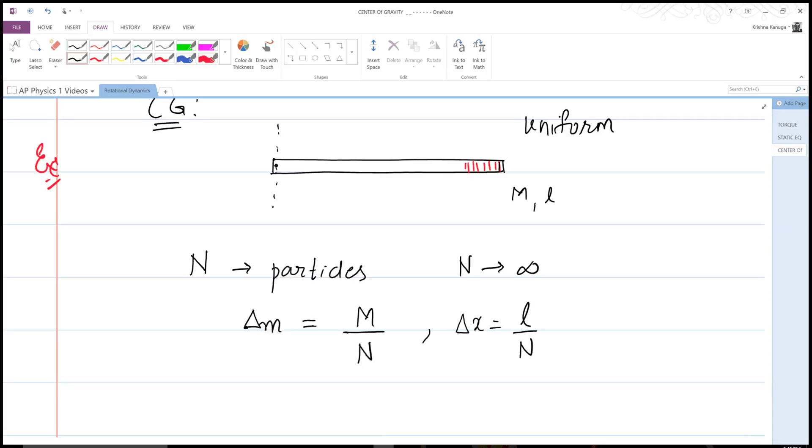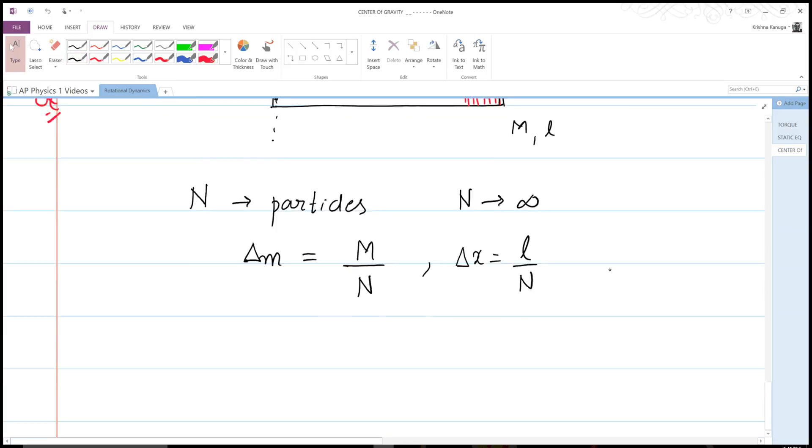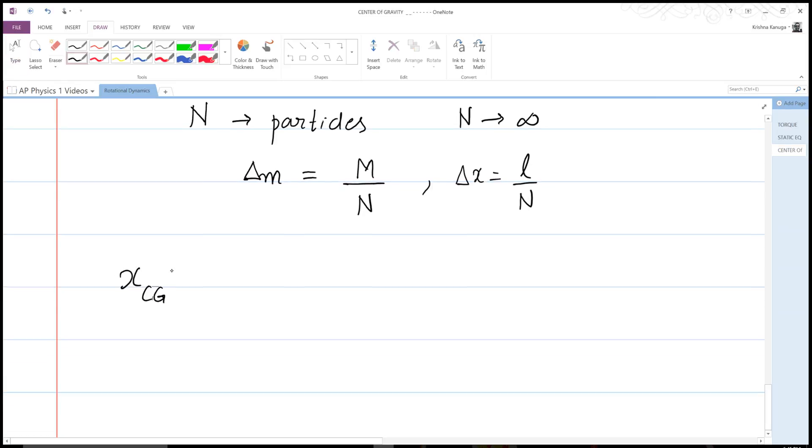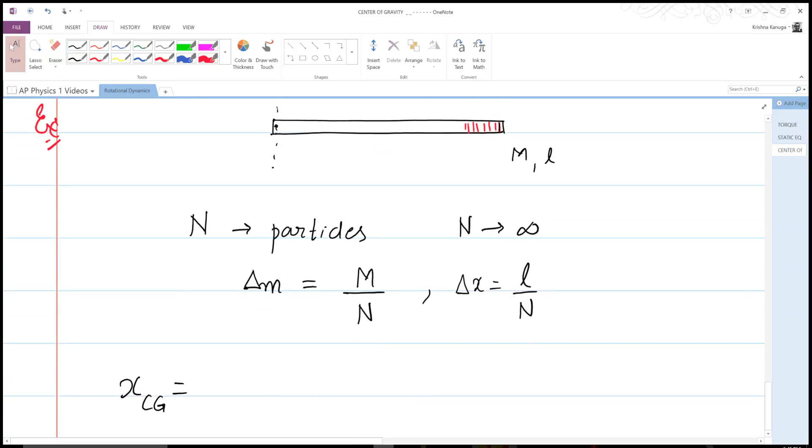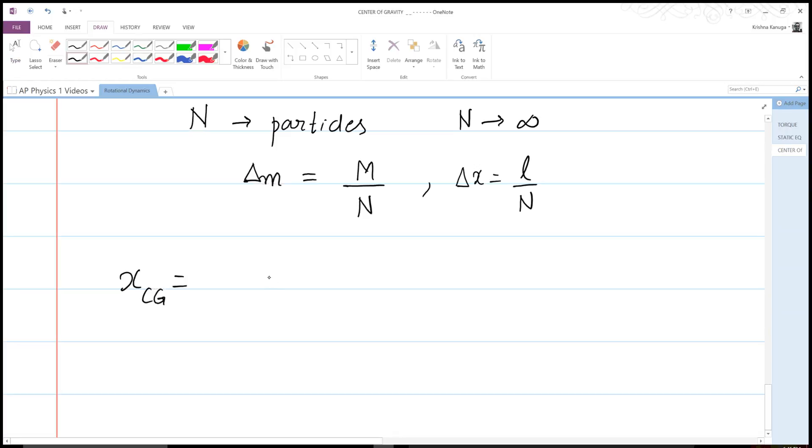The X center of gravity therefore will be equal to the first particle, which will be—we'll assume that this thing is right at the edge, so my first particle is going to be somewhere over here. It'll be equal to L over N, which is the position, times the mass of the particle Delta M, which is M over N. So this is basically X1 times Delta M, plus the next one will be located at 2L over N times once again M over N.